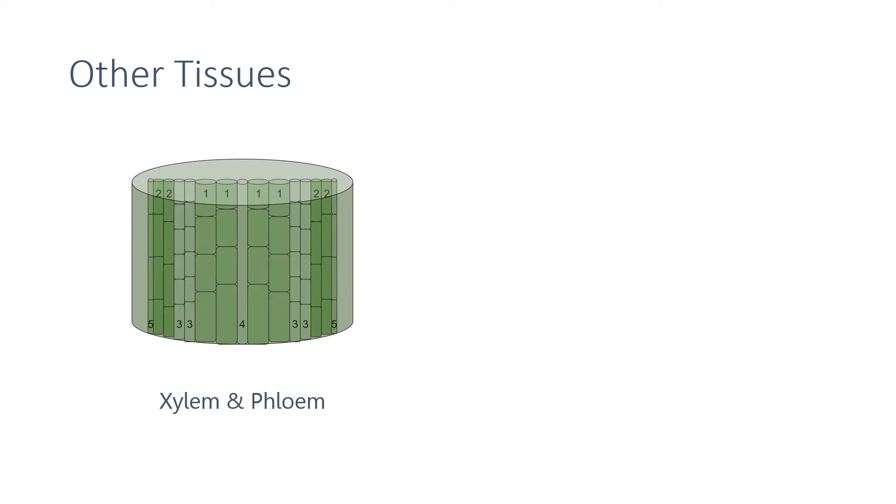Other tissues you need to know about are the xylem and phloem which are important in transporting materials around the plant. The xylem transports water and any dissolved minerals and the phloem carries dissolved food.